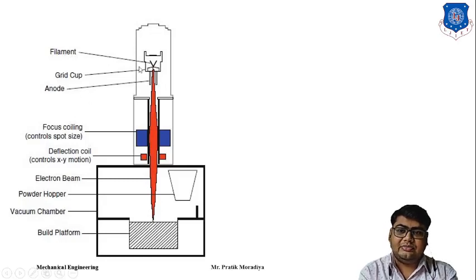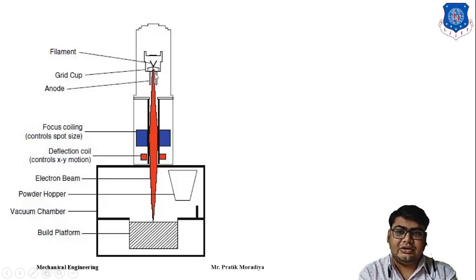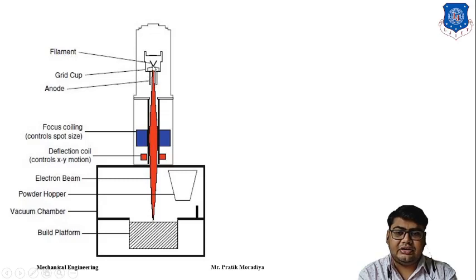This diagram shows the arrangement of the equipment. On top we have the electron beam generating equipment — this is basically the electron gun — in which there will be a filament, a grid cup, and an anode. The filament will be heated and the heat will release electrons. The anode will have a negative charge and the electrons, which also have negative charge, will move downwards.